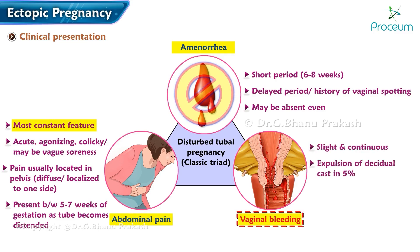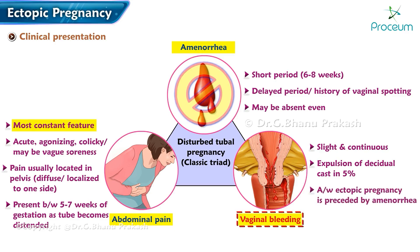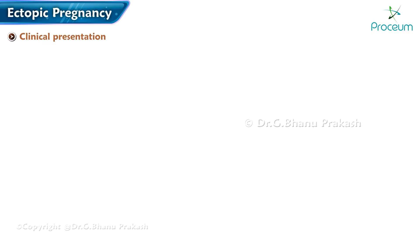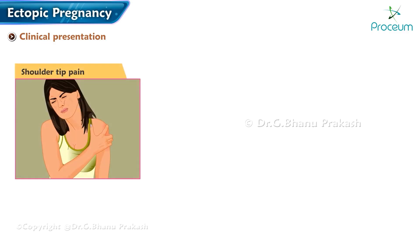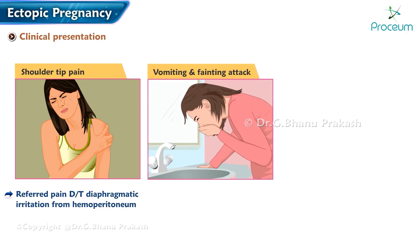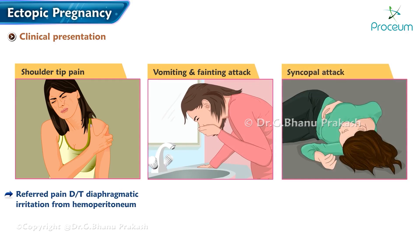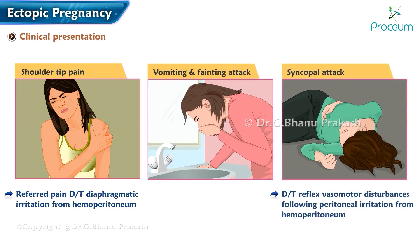Expulsion of decidual cast may be seen in five percent of cases. Vaginal bleeding associated with ectopic pregnancy is typically preceded by amenorrhea. Shoulder tip pain is present in 25% of cases due to diaphragmatic irritation from hemoperitoneum. Vomiting and syncopal attacks occur in about 10% due to reflex vasomotor disturbances following peritoneal irritation from hemoperitoneum.